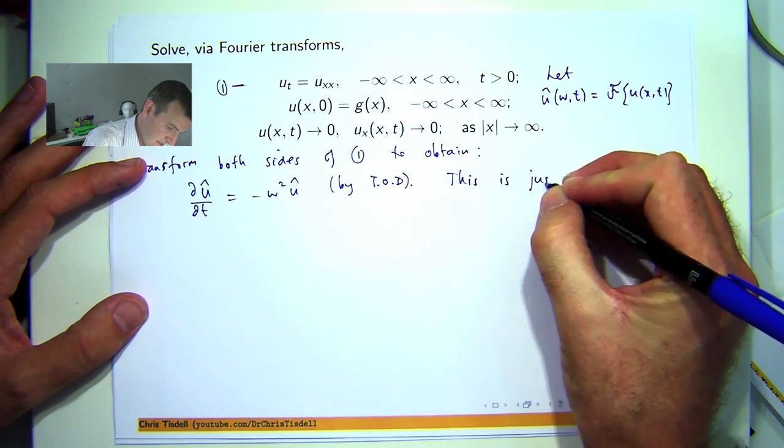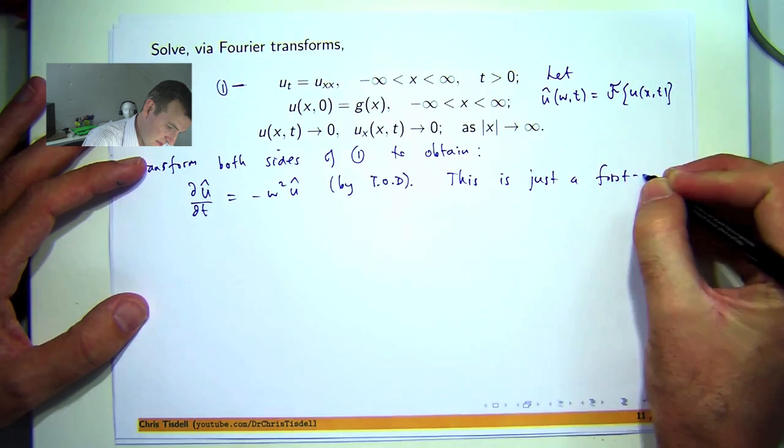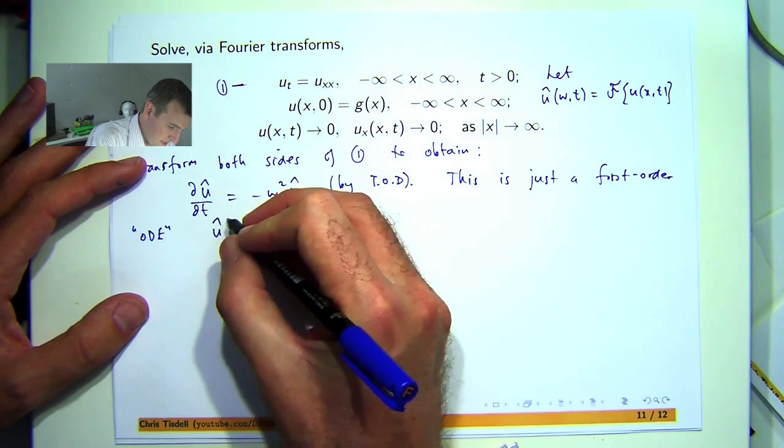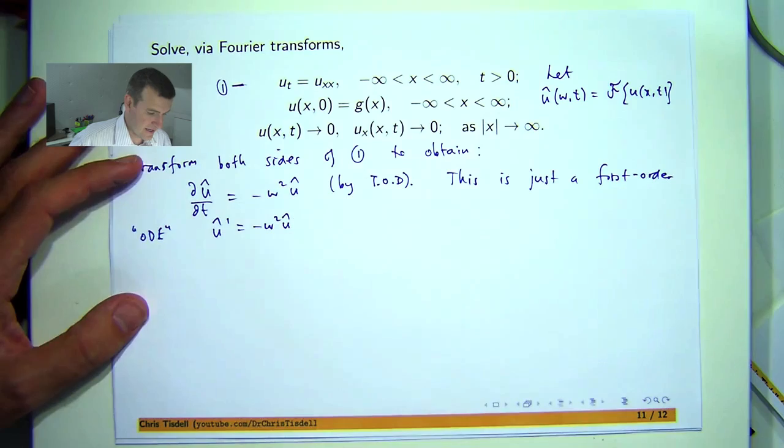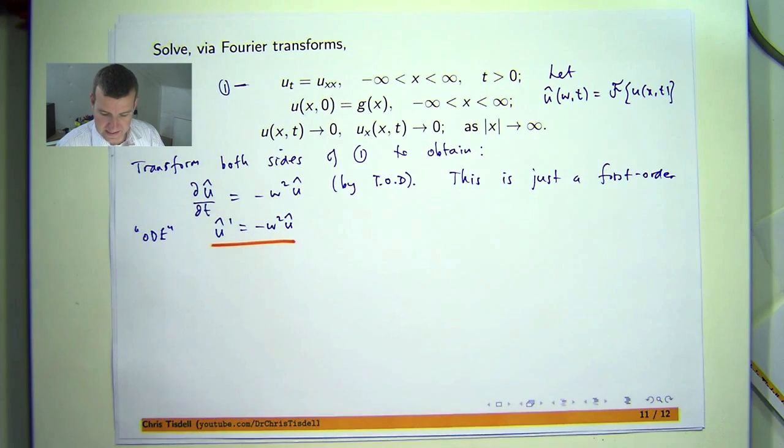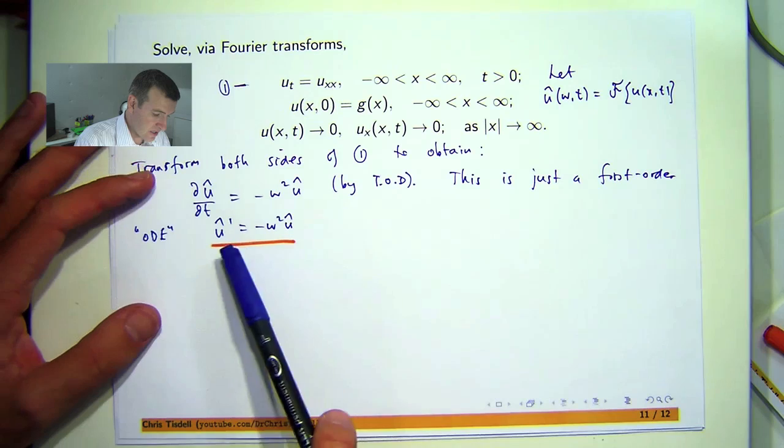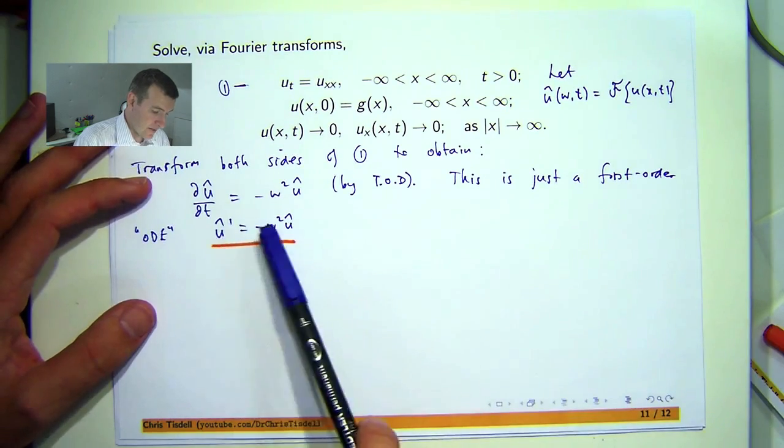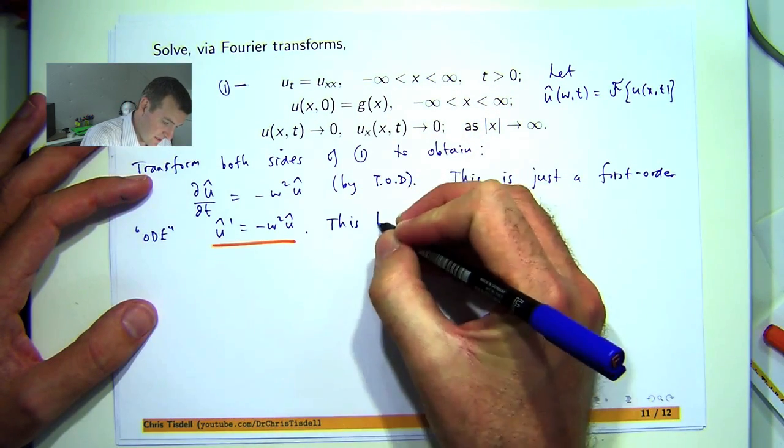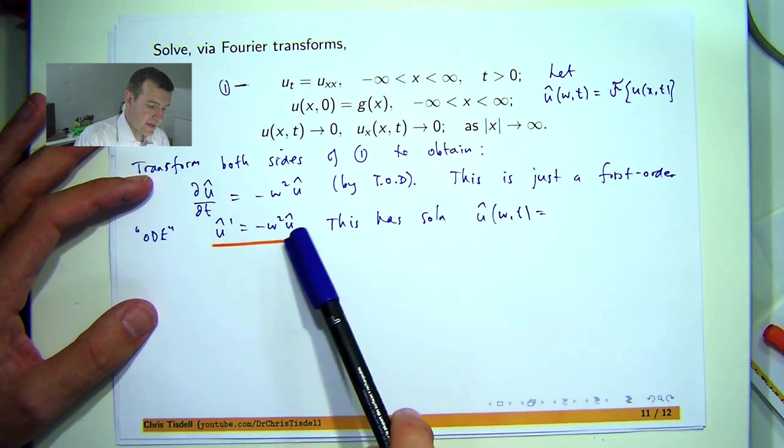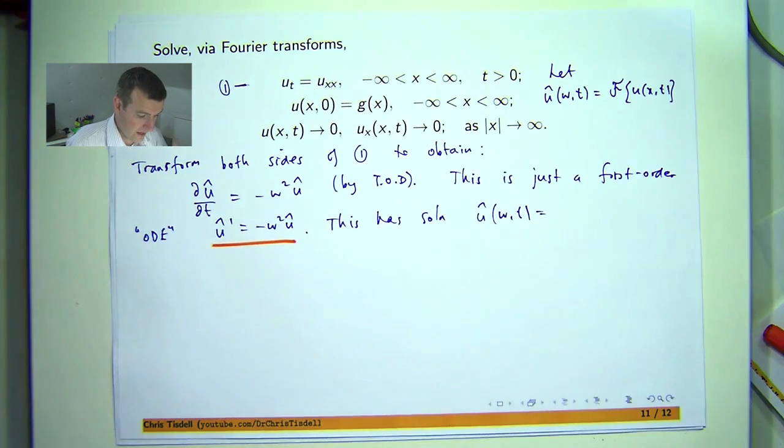This is just a first order. So I might just write it like this. Where the dash means differentiation with respect to the t variable. So how do we solve this? Well, in a course in calculus or a first course in differential equations, you know that the solution to this problem, treating w as essentially playing the role of a constant, the solution is an exponential function. So this is a general solution now. It's basically e to this times t.